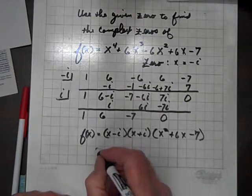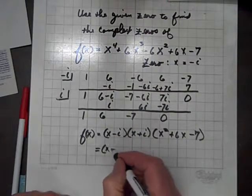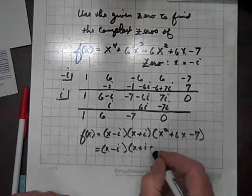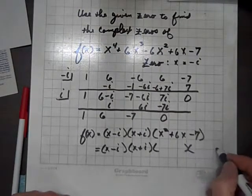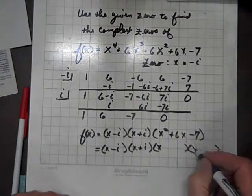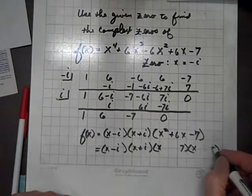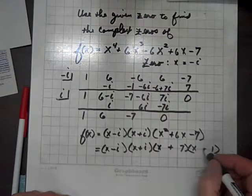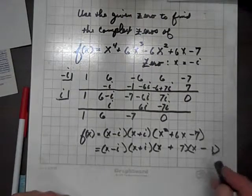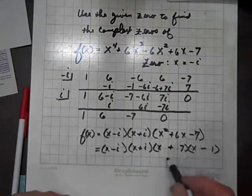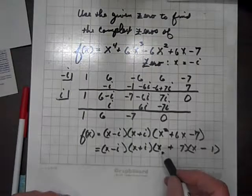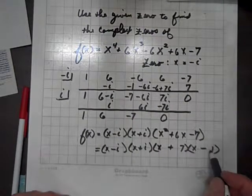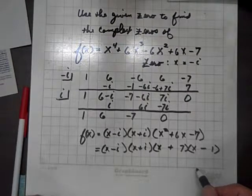So, then this equals x minus i times x plus i times x plus 7 times x minus 1. The 7 will get the positive, the 1 will get the negative. And we'll check that out. 7 times x is 7x, negative 1 times x is negative x, 7x minus x is 6x, and 7 times negative 1 is negative 7. So, it works.